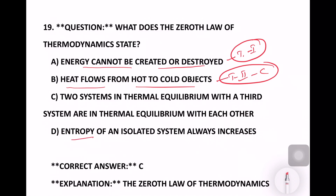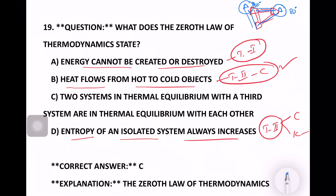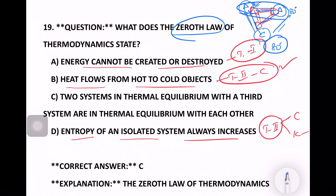Entropy of an isolated system always increases is also the second law — Clausius statement. For the zeroth law: two bodies in thermal equilibrium with a third body are also in thermal equilibrium with each other. For example, if two bodies are both at 80 degrees and in thermal equilibrium with a third, all three share the same temperature. That is the zeroth law of thermodynamics.